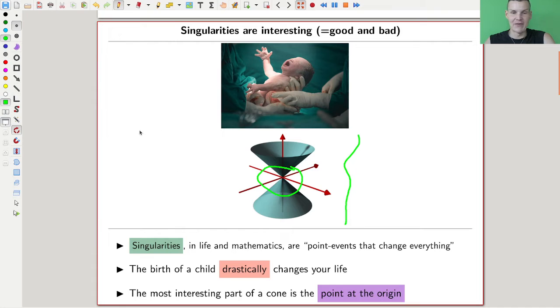For example, a cone - the most interesting part of a cone is probably the origin, right? Because that's where something singular happens. Otherwise it always looks the same, it gets a bit bigger or a bit smaller, but essentially it looks the same. Mathematics, algebraic geometry in particular, is a lot about studying singularities. Singularities are interesting - hopefully this slide is convincing enough that singularities are interesting.